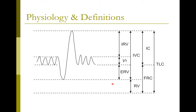FRC is the amount of volume in our lungs at the end of normal exhalation. By convention, this is considered the resting volume — when the lung is at complete rest, it's at functional residual capacity. So at the end of normal tidal volume exhalation, the lung is at rest, the lung is at FRC. The difference between FRC and RV represents ERV, or expiratory reserve volume.